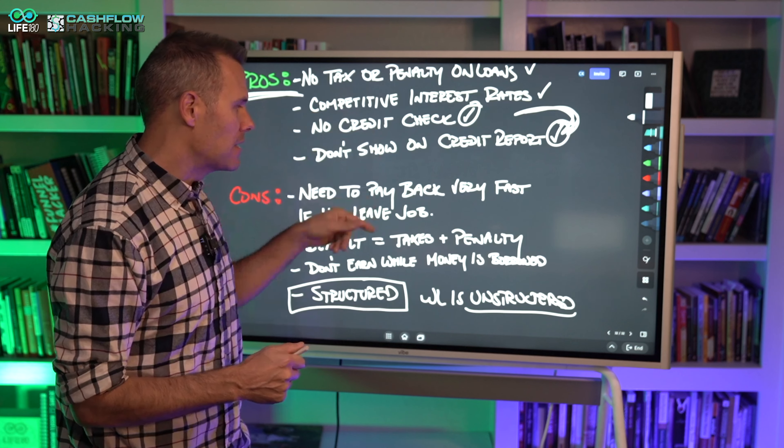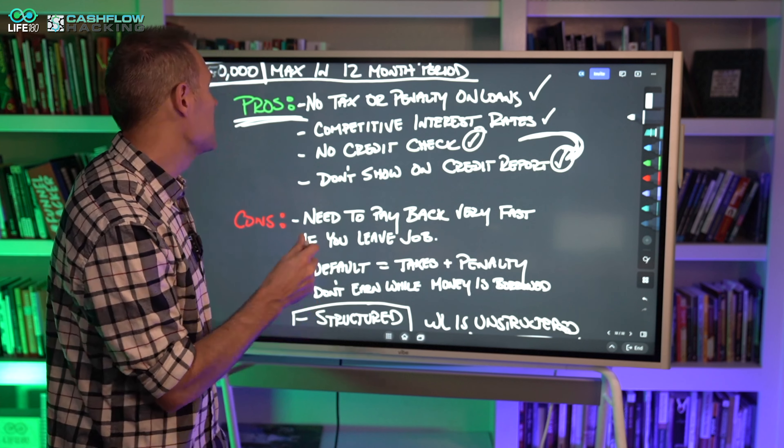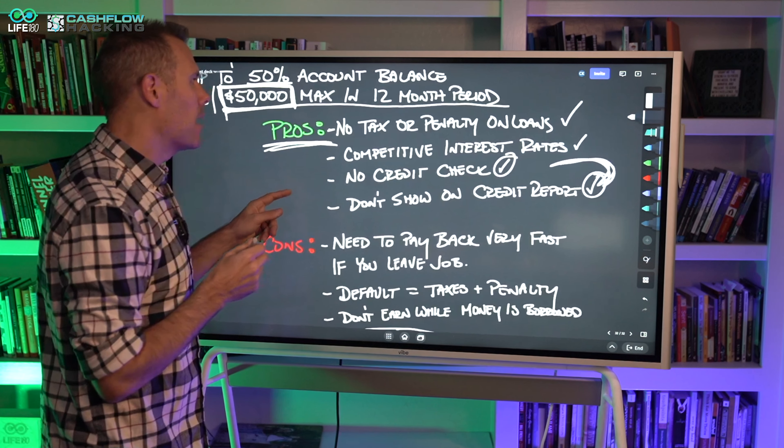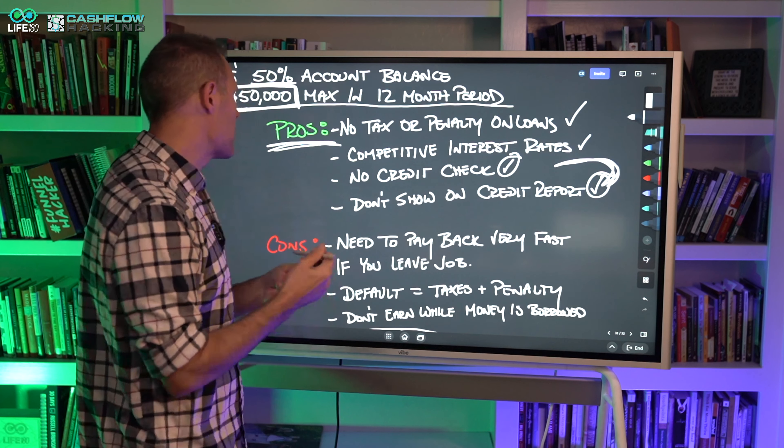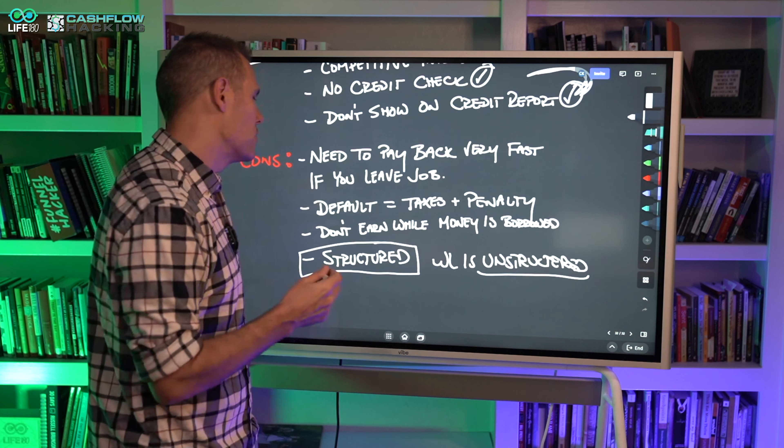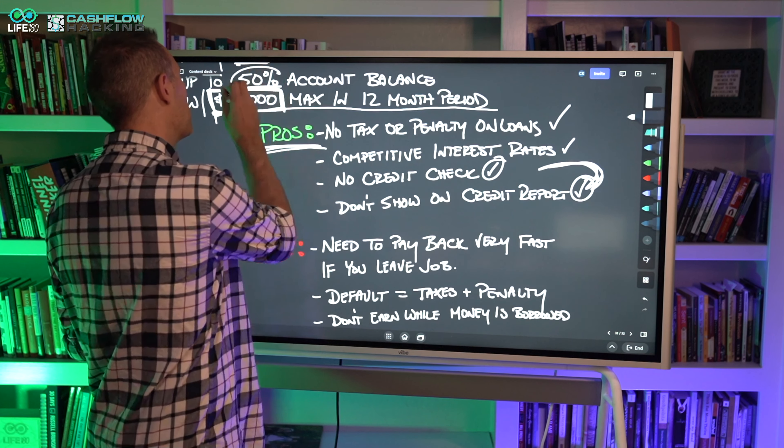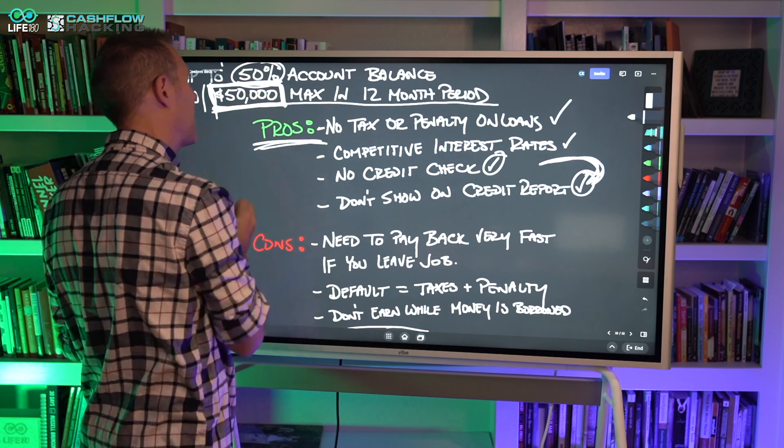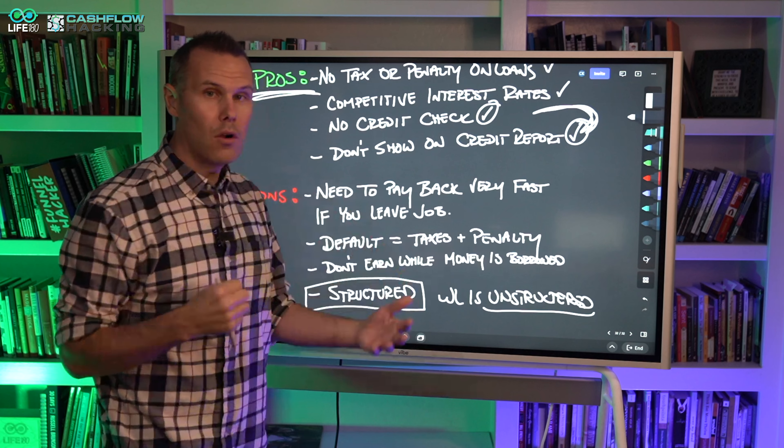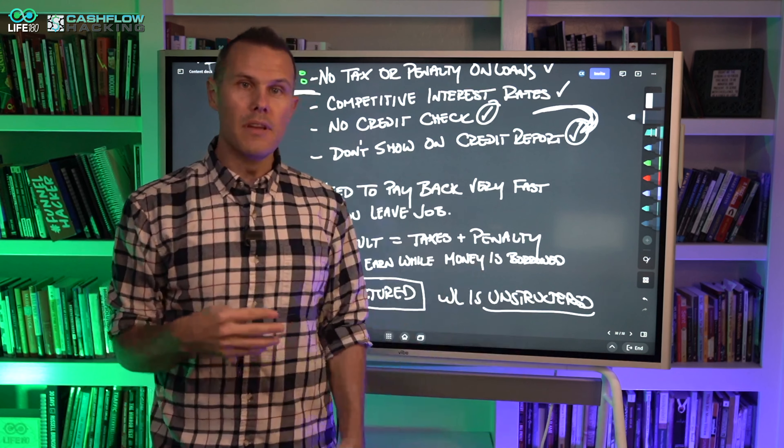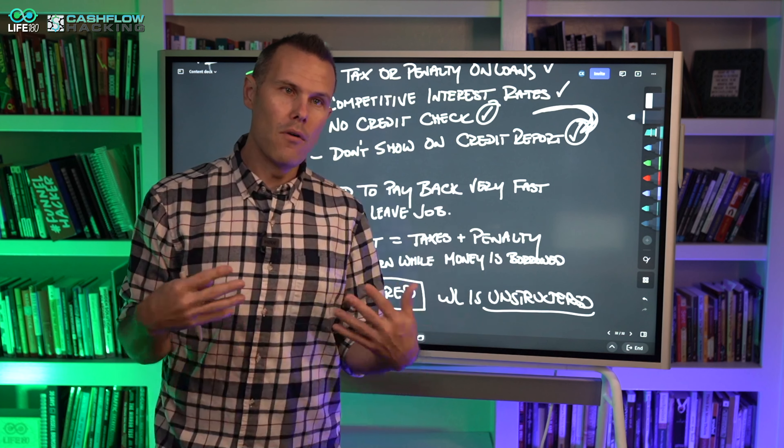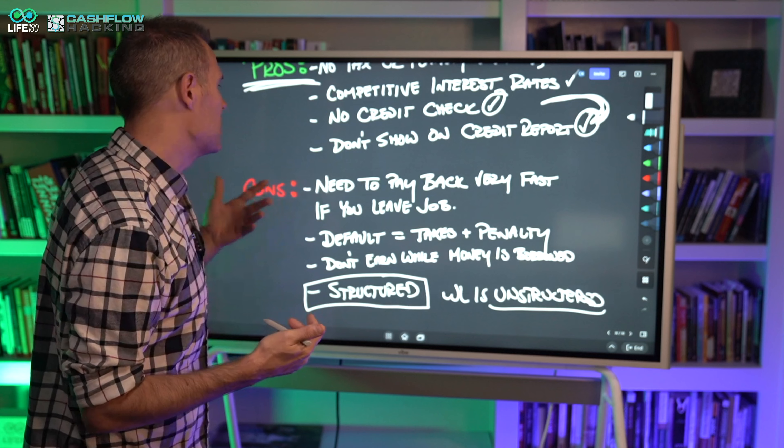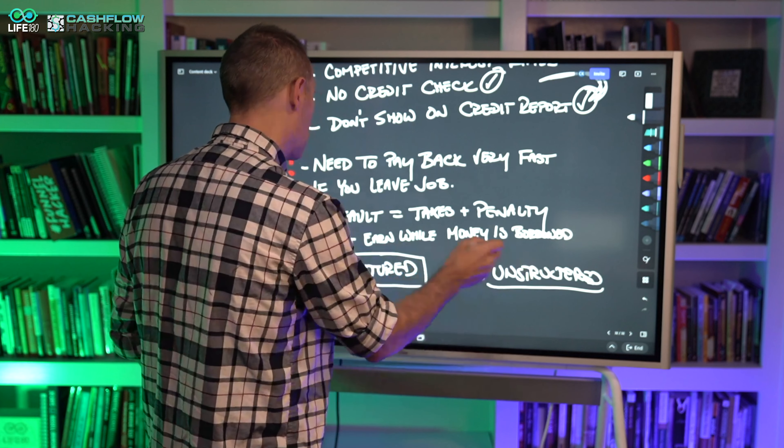But the bottom line is a 401k loan is structured, whereas a whole life insurance policy loan is unstructured. You have guaranteed access to the money in a whole life policy. You have access to up to 100% of your money using a third party bank, or about 90% of the net cash value using the policy loan provision with a life insurance company. Whole life insurance is going to have no cap on this $50,000 cap.